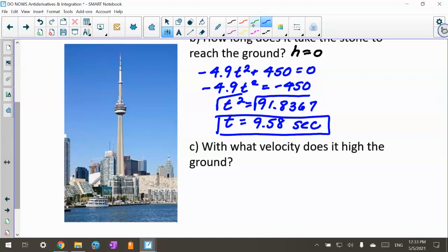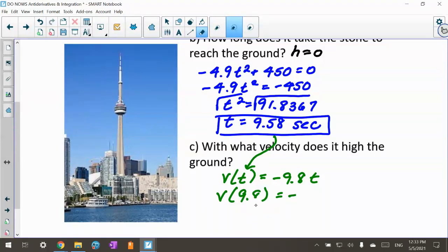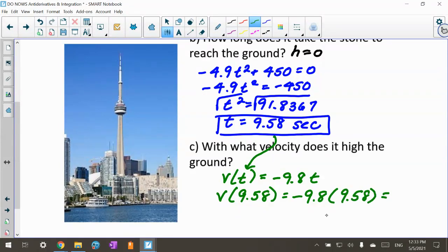Now we want to know with what velocity does it hit the ground. Our velocity equation is v(t) equals negative 9.8t. At 9.58 seconds, I plug that in to find the velocity. The velocity at 9.58 seconds is negative 9.8 times 9.58, so it hits the ground with a velocity of negative 93.884 meters per second, which is pretty fast. And all they did was just drop it.